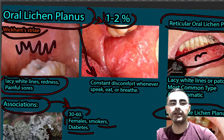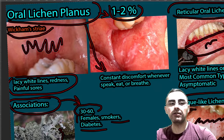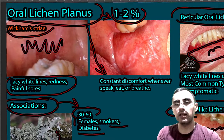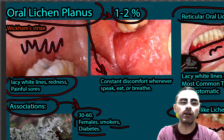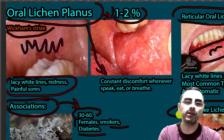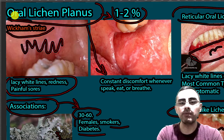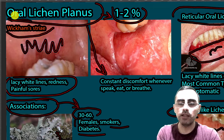Lichen planus is an important disease. Of course, lichen planus also occurs on the skin and is part of dermatology, but we did not cover skin manifestations — we discussed only oral manifestations. Thank you for your interest and for watching.